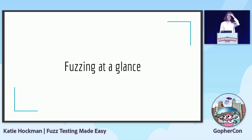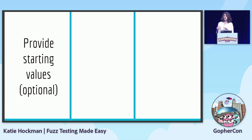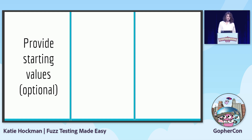Before we jump into some code, let's take a moment to discuss the main stages of fuzzing as it runs. The first thing that's going to happen is you'll provide some starting values to the fuzzer. This is going to be especially helpful if you're trying to fuzz something specific — for example, a parser. If you're trying to parse images, HTML, or JSON, providing these inputs is going to be really helpful to the fuzzer. You should be able to leverage inputs you're already using in your unit tests, so you really shouldn't have to write too many new ones. This is optional with Go, but it does make fuzzing more effective faster.